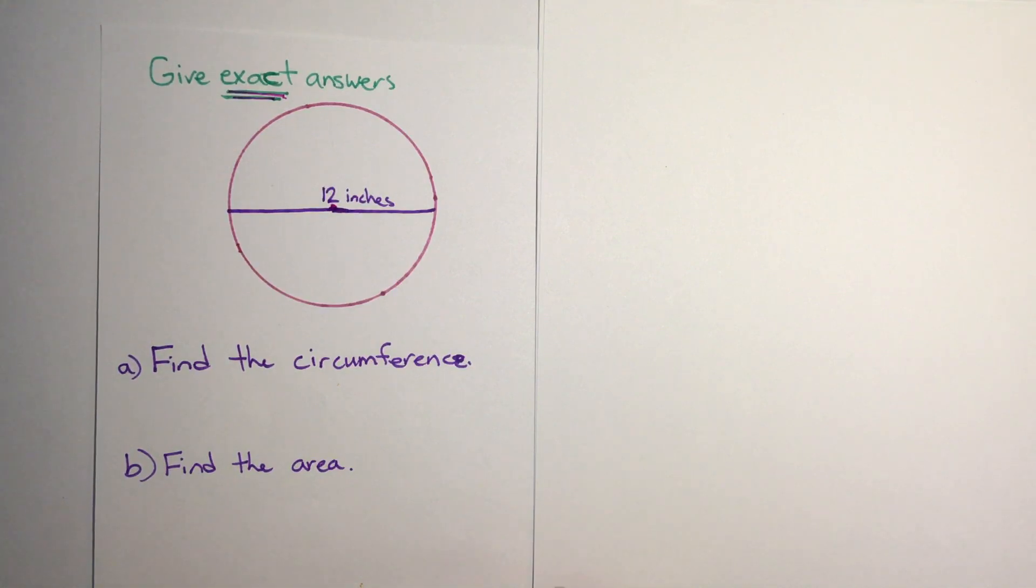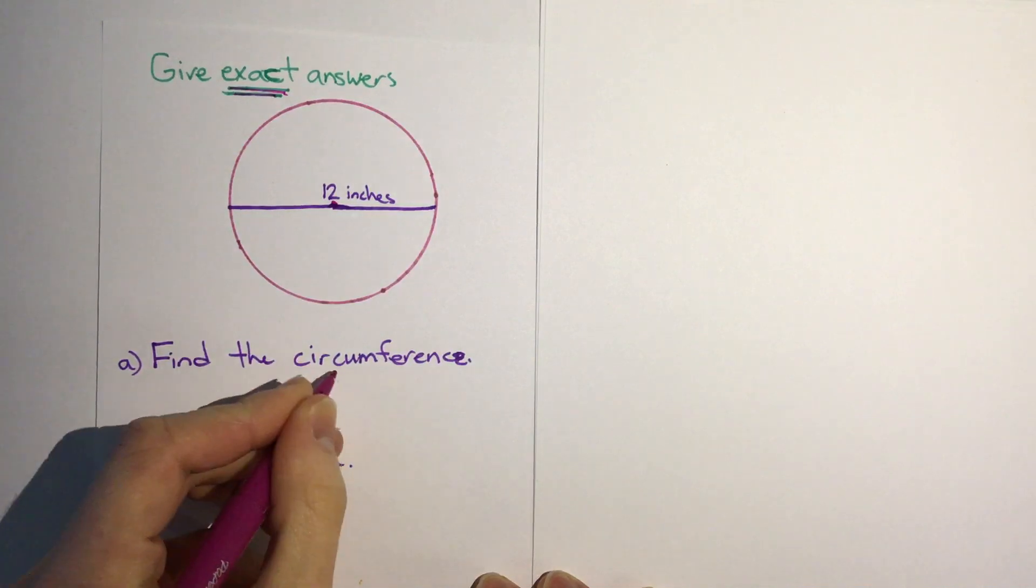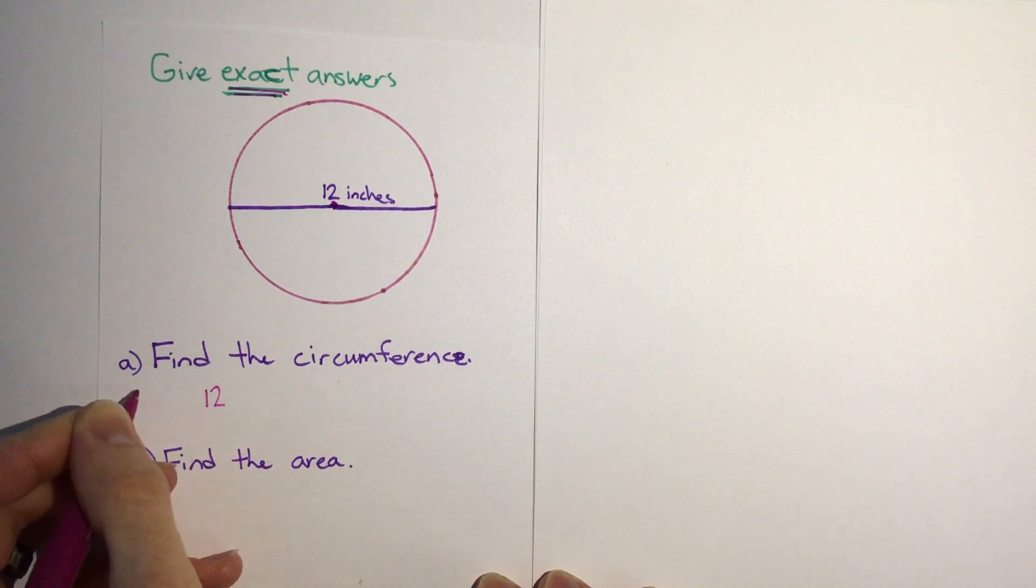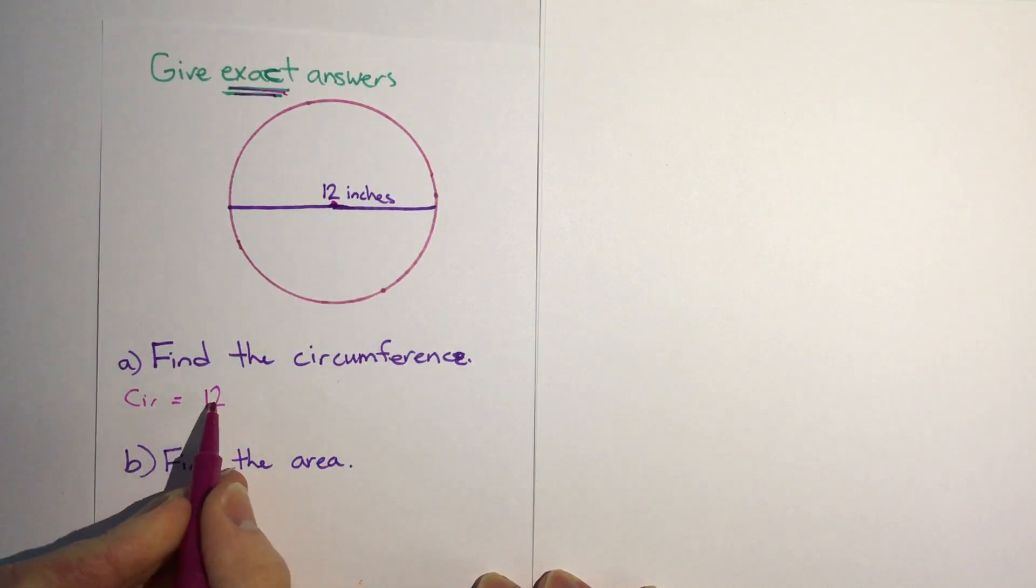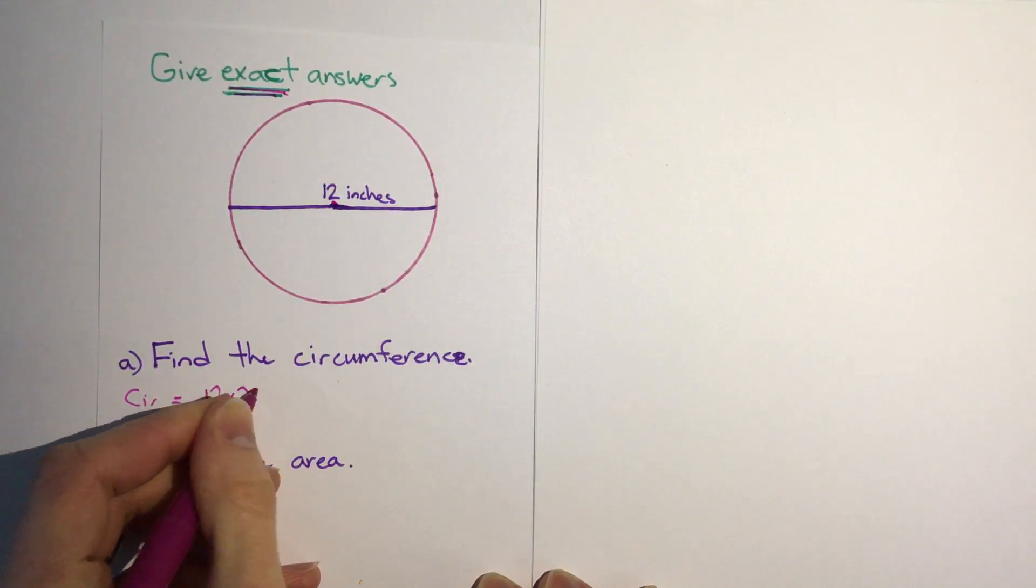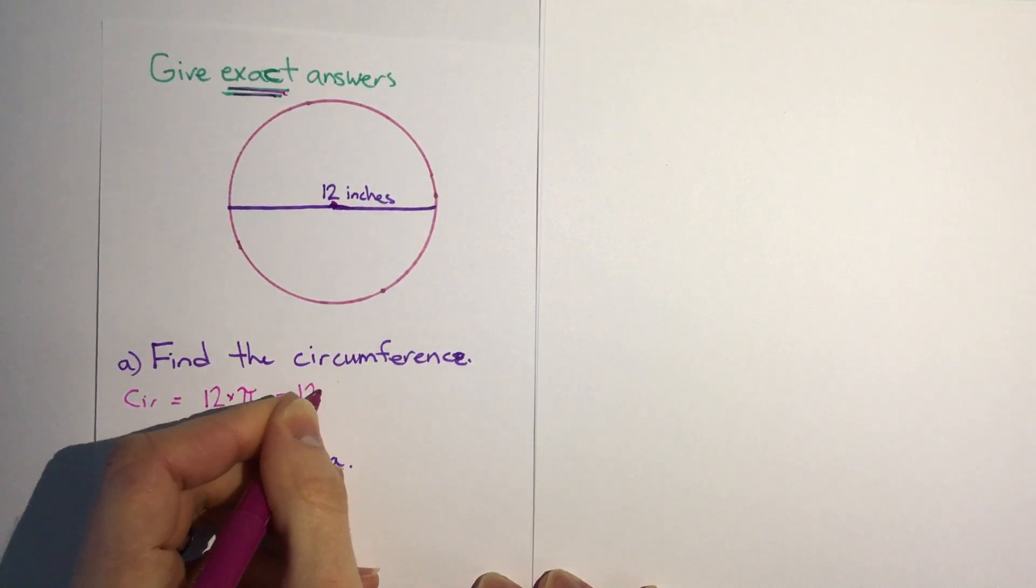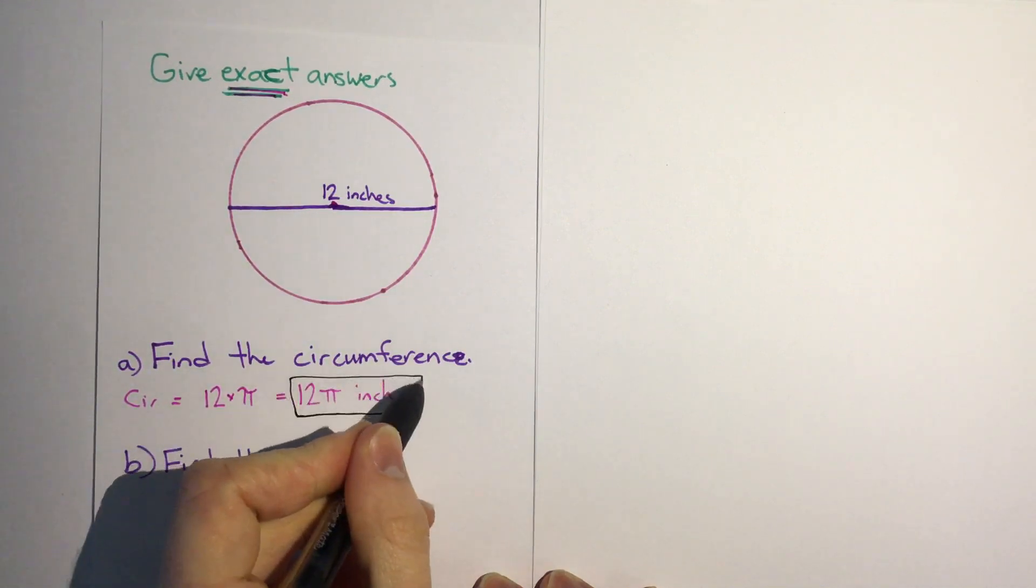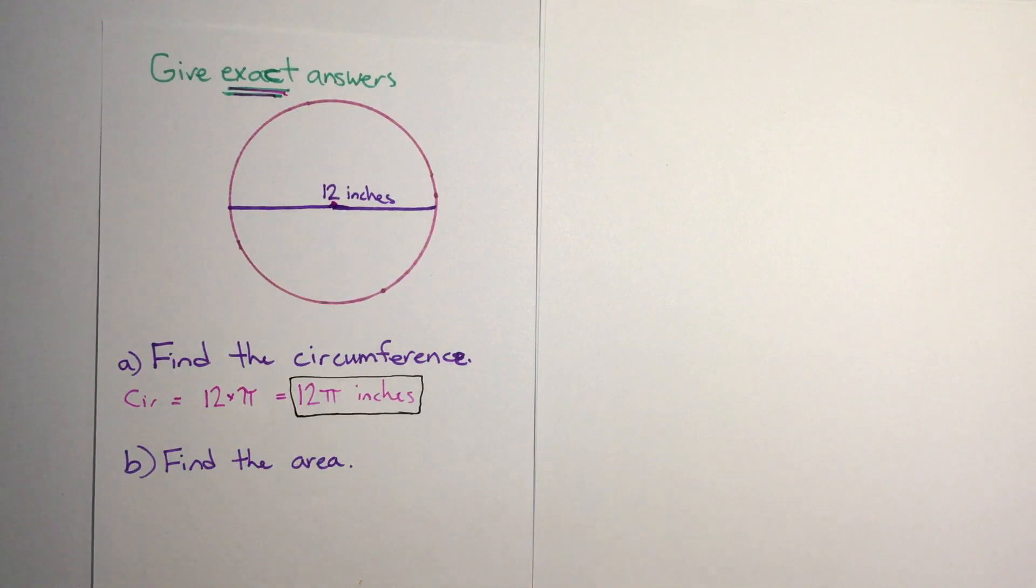So we know circumference is diameter times pi. So if we write circumference here equals our diameter, which is 12, times pi, we can just write our answer as 12π or 12π inches. Since it says give exact answer, we're not going to put that in the calculator, but that's our answer - 12π inches. If we need to see what that number is we can put it in the calculator, but that would be our final answer.